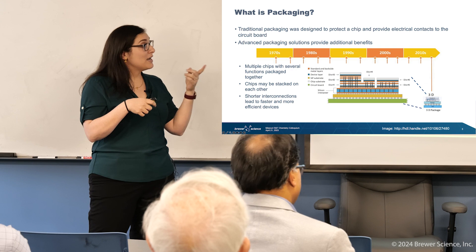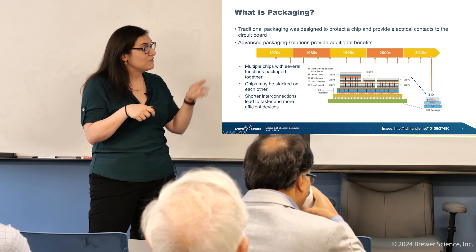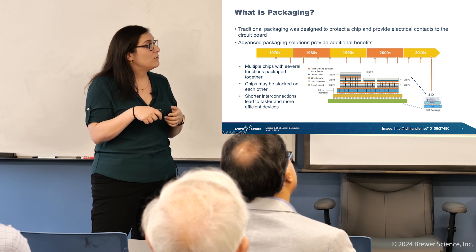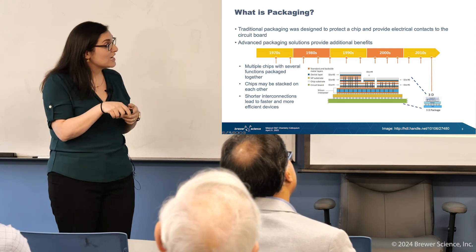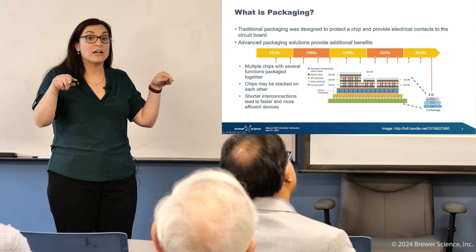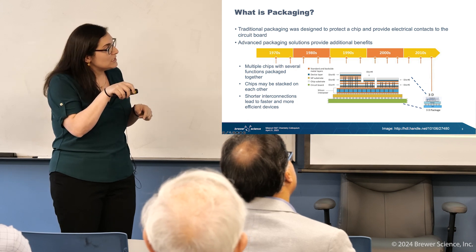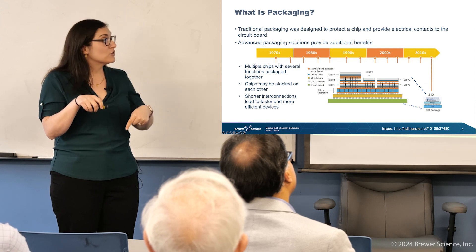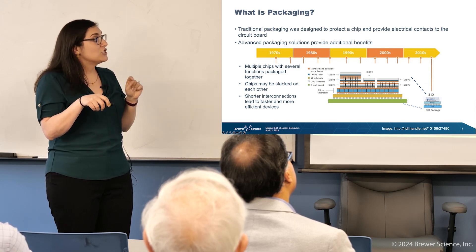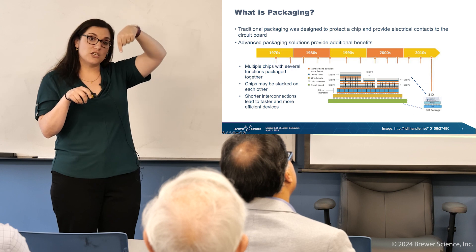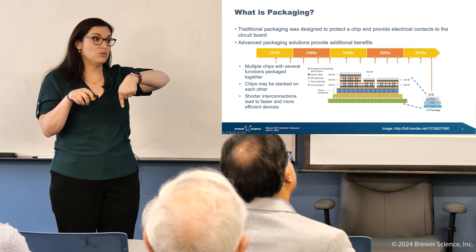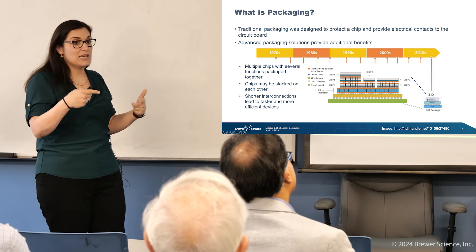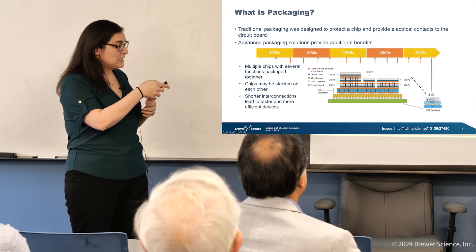Within a chip within a package, they might have multiple different functions. In fact, this design has every function integrated within one package. You'll notice the interconnects are no longer big long wire bonds — what you see here are black lines going actually straight through the chip itself. Those are called through silicon vias. All of your interconnects are going directly to where they need to go. Those shorter connections are what help us make faster, smaller, and more efficient devices.